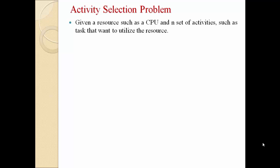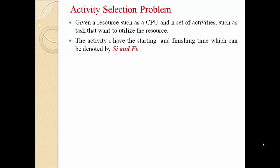First of all, what is the activity selection problem? Suppose we have one CPU and n activities, all using the CPU as a resource. Since we have only one CPU, at a time only one activity can be executed. Each activity i has a starting time and finish time denoted by si and fi, where s indicates the starting time and f indicates the finish time for activity i.